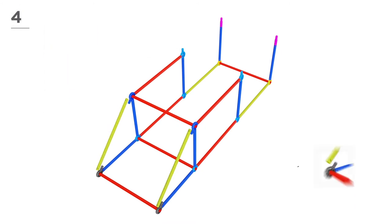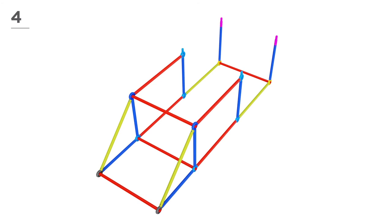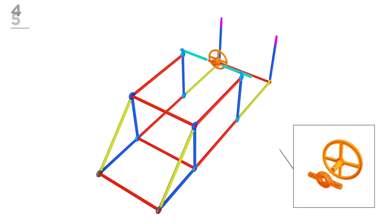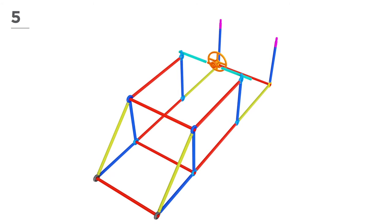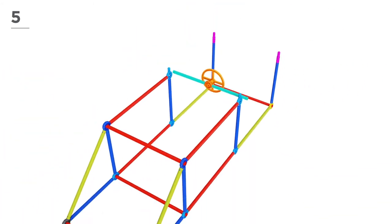For the front area, snap-and-click 3 red poles and 2 lime poles into place, as shown here. Now, using 2 teal poles, 1 orange connector, and 1 steering wheel, fit the parts like this.